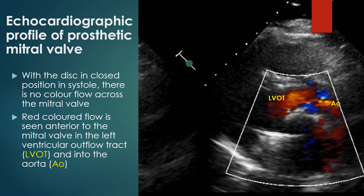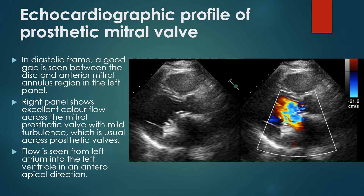With the tilting disc of the prosthetic mitral valve in the closed position in the systolic frame, there is no colour flow across the mitral valve. At the same time, red coloured flow is seen anterior to the mitral valve in the left ventricular outflow tract and into the aorta. In the diastolic frame: